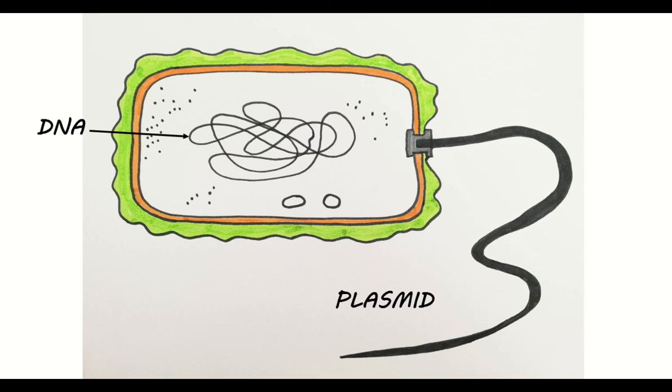In addition, they often have plasmids, which are smaller rings of extra DNA. Plasmids can often contain genes for antibiotic resistance and can be passed quite easily from one bacterium to another, even from one species of bacteria to another.